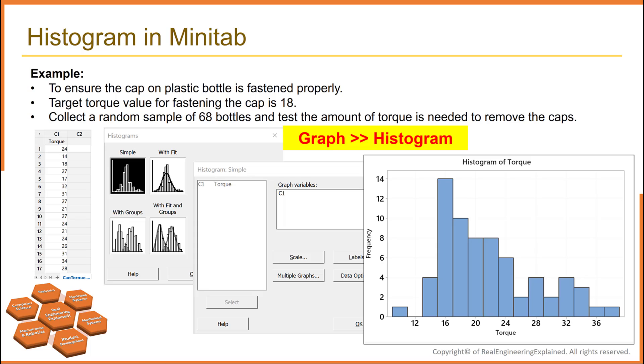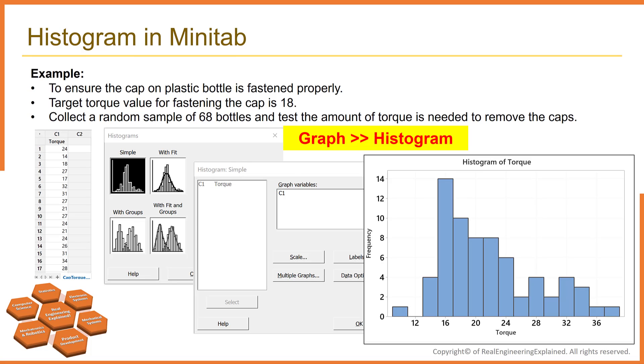Here is the data. To plot the histogram, go to the graph menu and select Histogram, then select Simple, and then select Column C1 or Torque. And finally, hit OK.